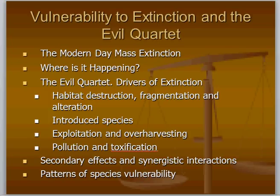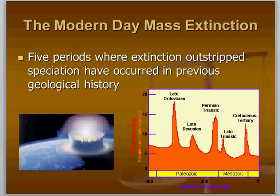Why does extinction have scientists so worried? I want to first introduce the concept of a mass extinction event. In normal geological times, the extinction rate of species on the globe is usually about one to two species per year — a background rate of extinction of about one to two species lost per year.